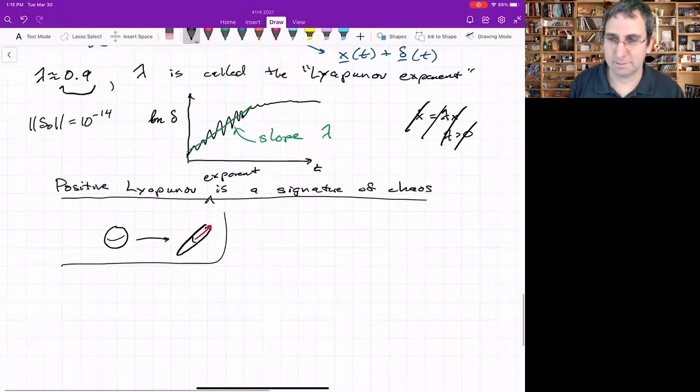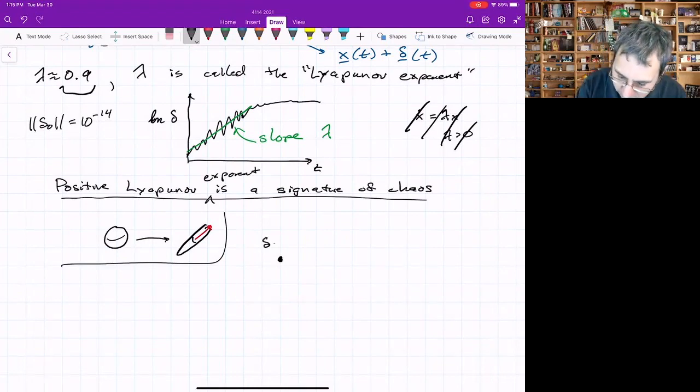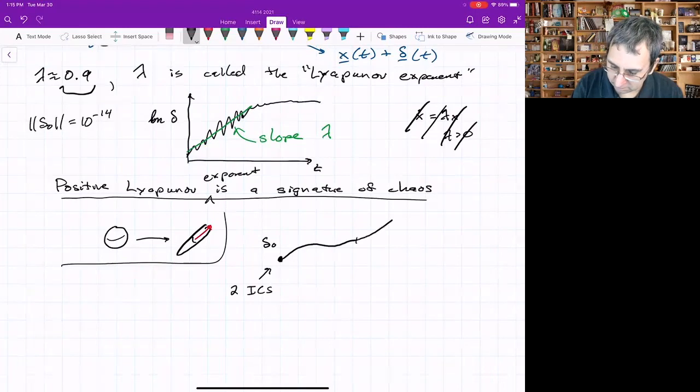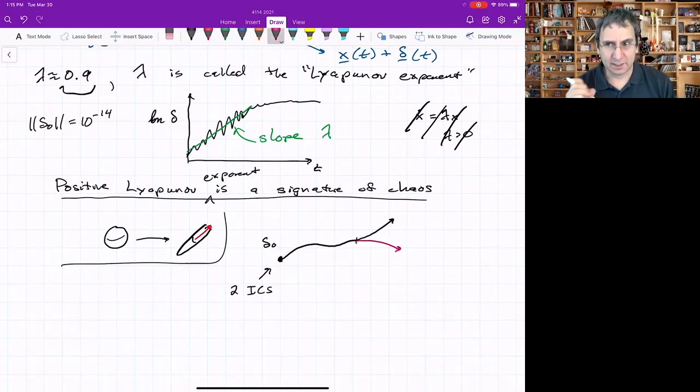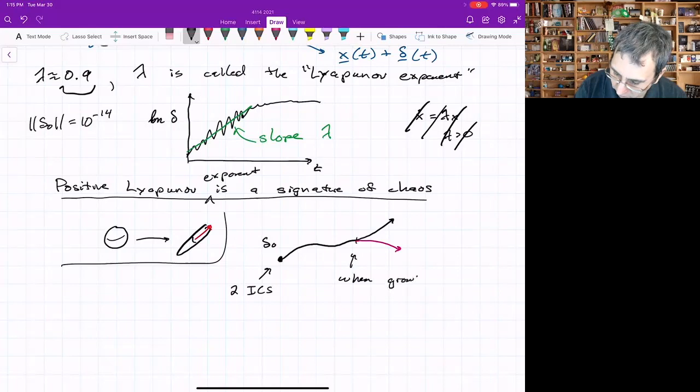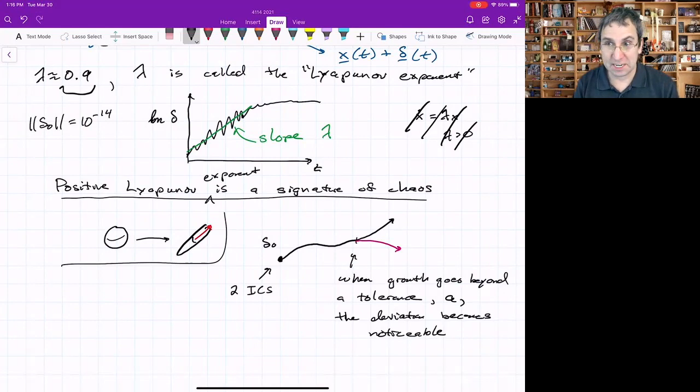What does that even mean? If we started out with two initial conditions that were separated by something just infinitesimal, very small. So we've got two initial conditions. Then they would seem to match for a very long time. And then at some point they would obviously be peeling off one from the other. And we could say that's when we would detect that there's been a separation. Maybe that tolerance is A. When growth in phase space goes beyond a tolerance that will say is A, the deviation becomes noticeable.